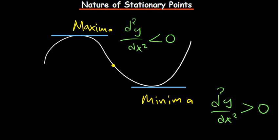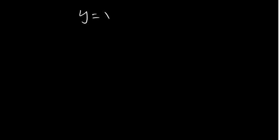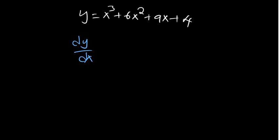We use the second derivative as a testing tool. Let's consider a simple cubic function. Determining the nature of the stationary points is very important when sketching the graph — it helps us. So first of all, we need to find the first derivative. The first derivative is going to be 3x² + 12x + 9.